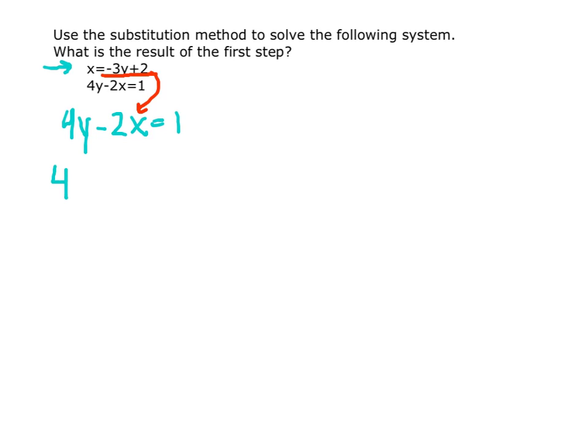So we have 4y minus 2 times our negative 3y plus 2, all equals 1. And this is the result of the first step.